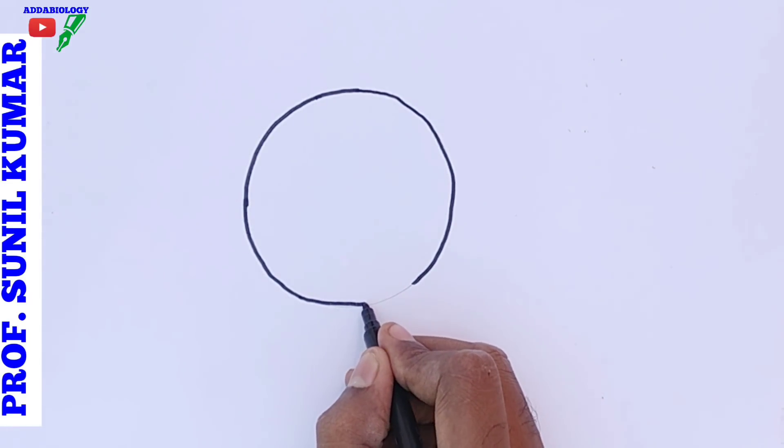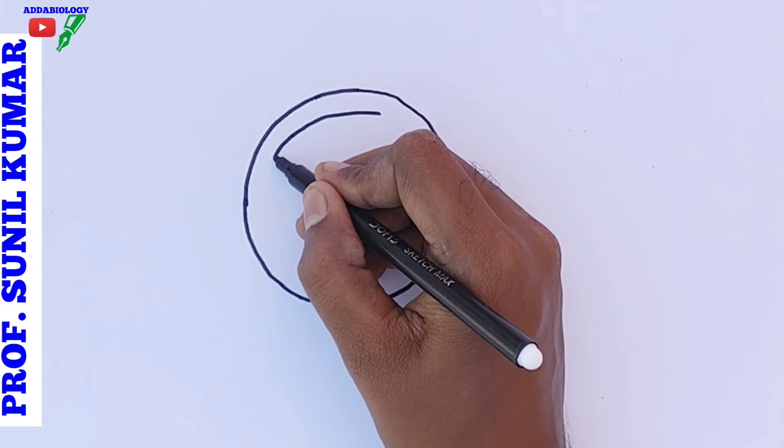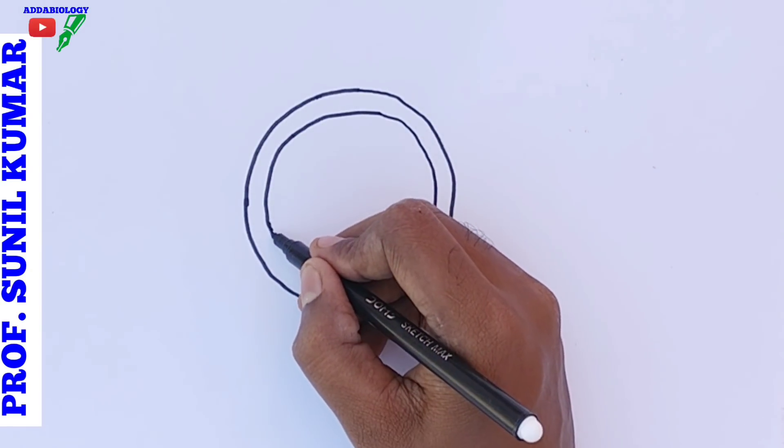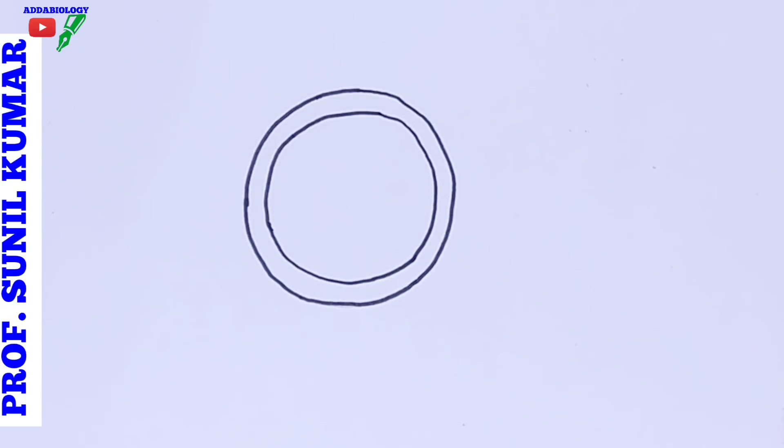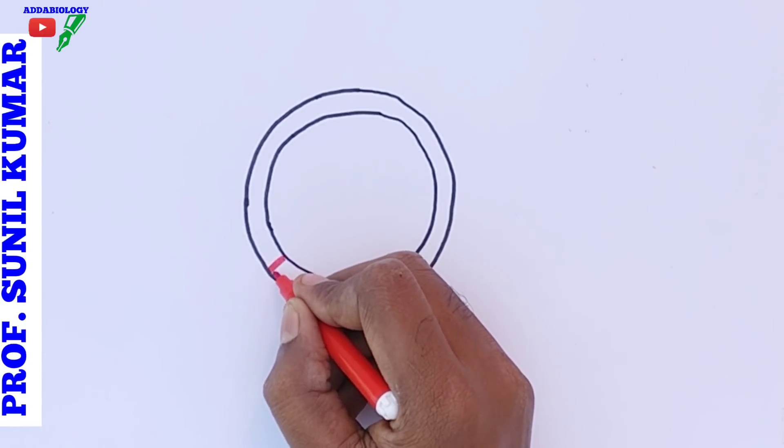Whenever we are drawing plasmid we remember the short forms but it's very difficult to remember the full forms. Most of the full forms are not given in our NCERT books. In this video I will be covering the full forms of all the possible enzymes and markers.